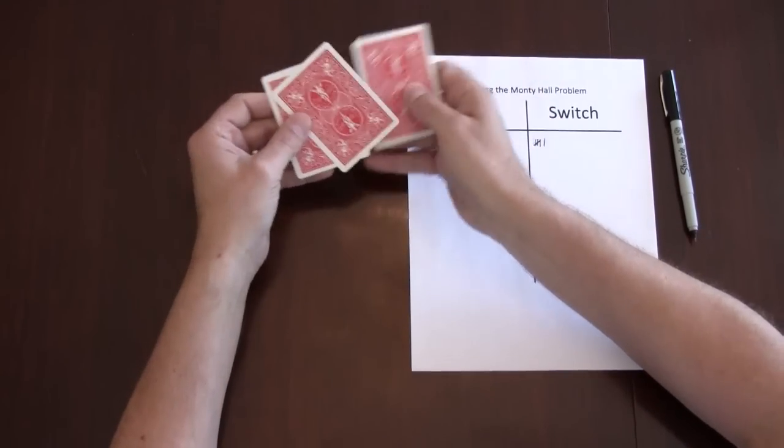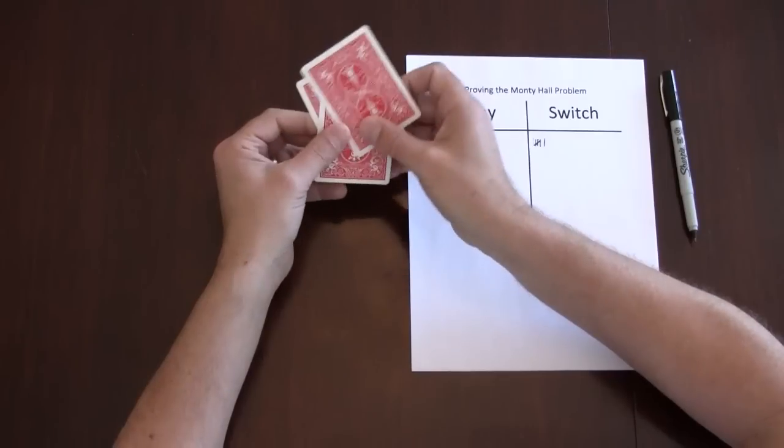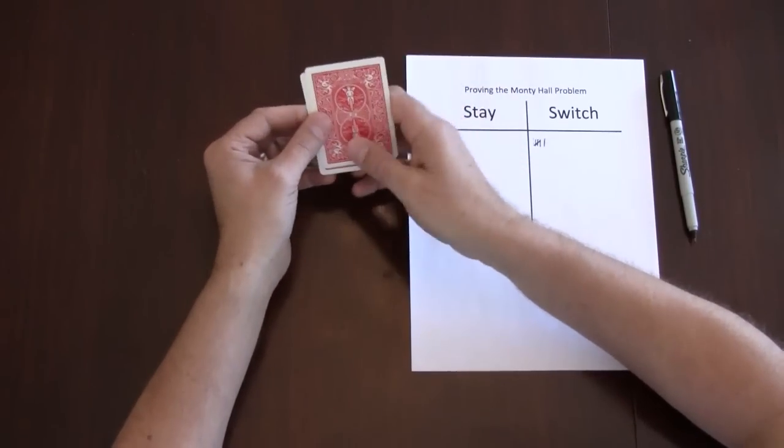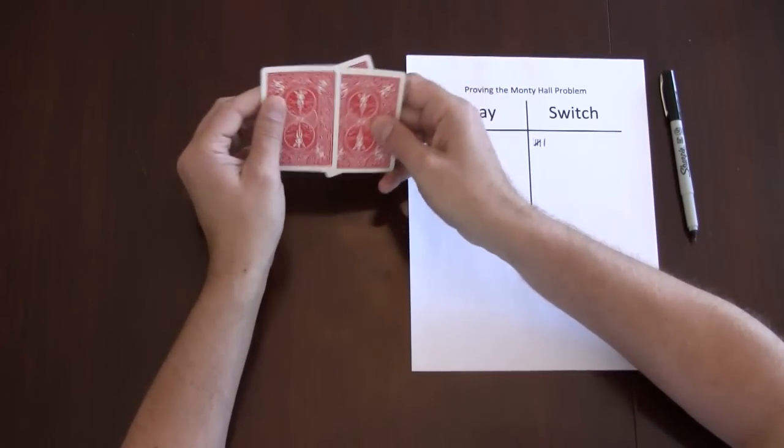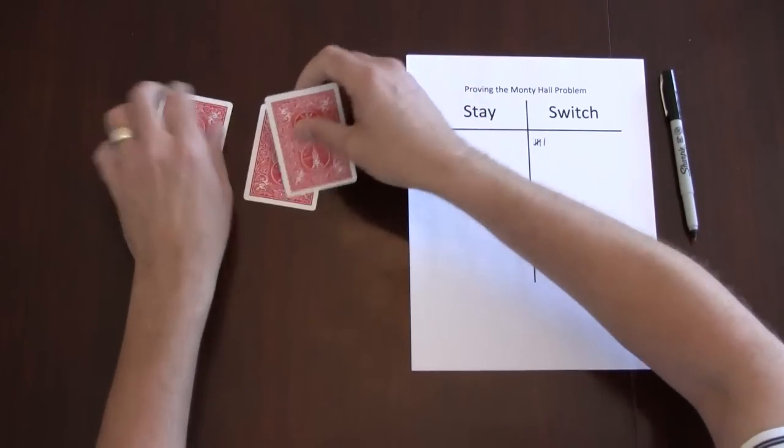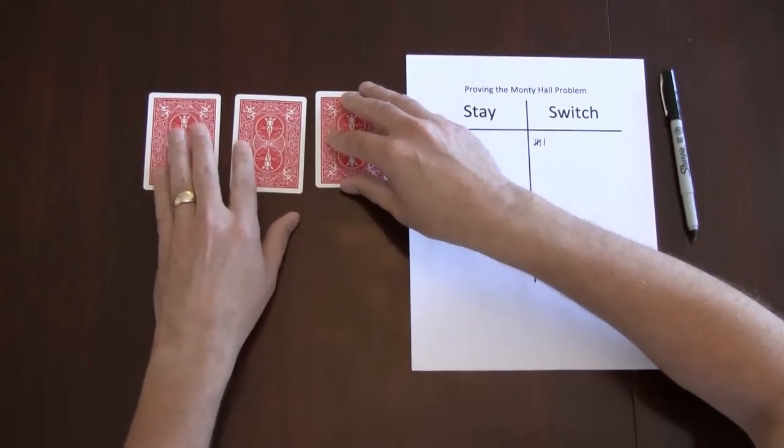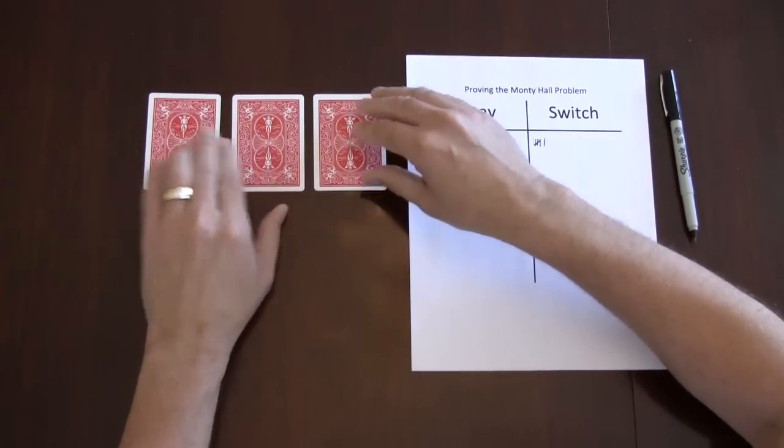And what we're going to do is we're going to shuffle them. There's actually two random systems or random choices that are made in this system. We're just going to use the first one, which is the producers randomizing where the car is behind the three doors.